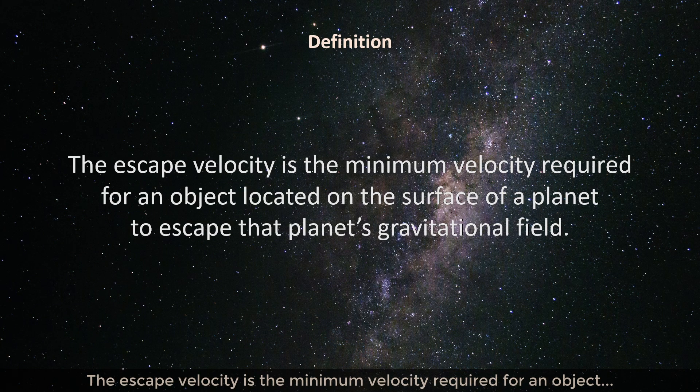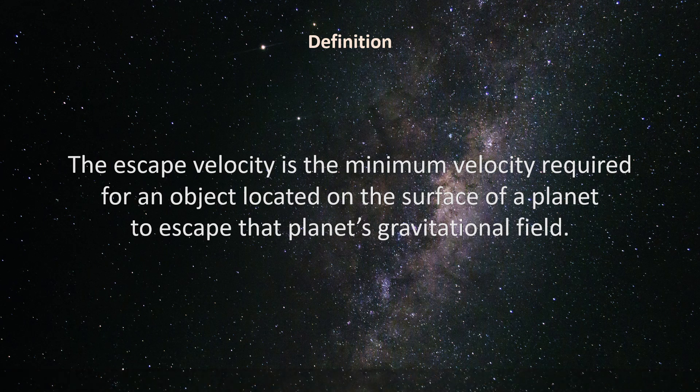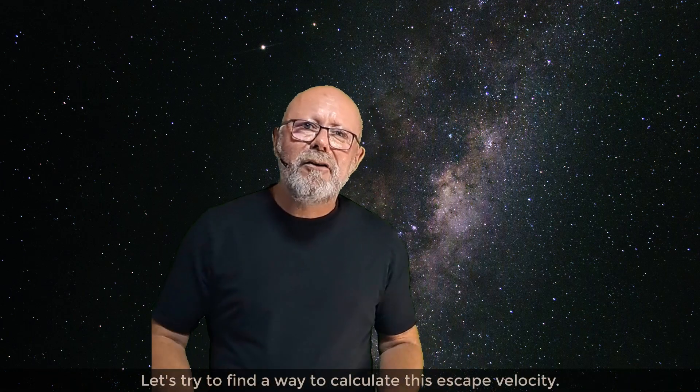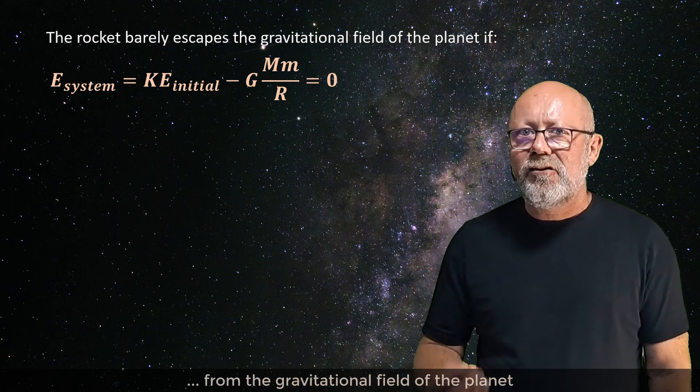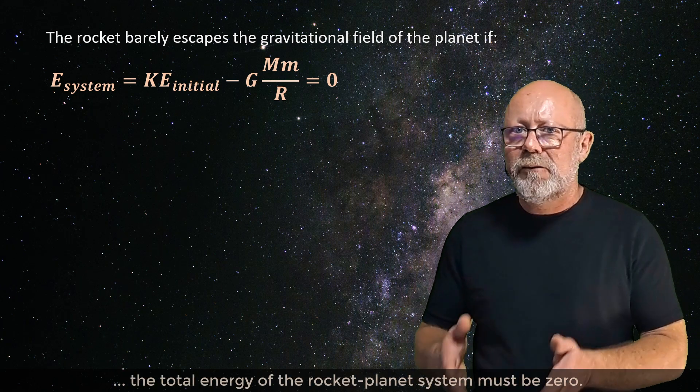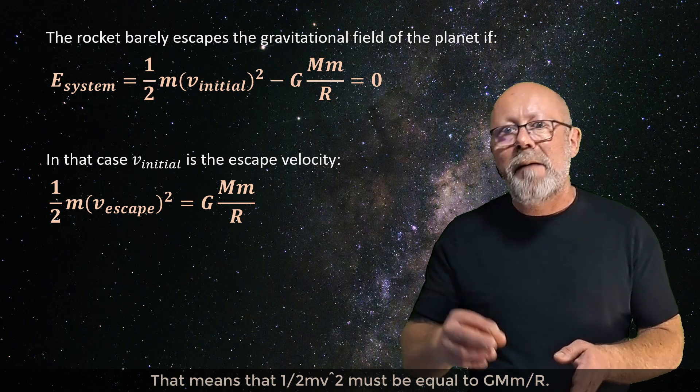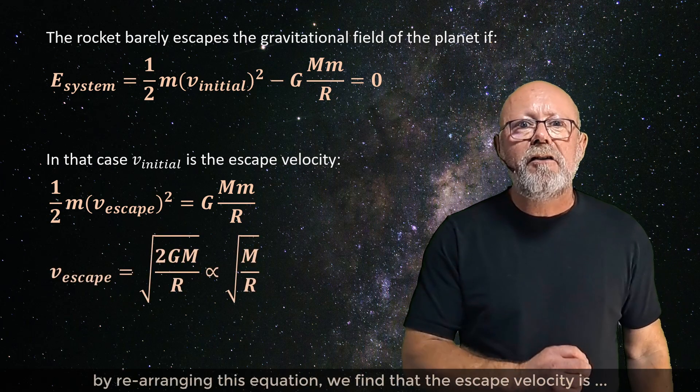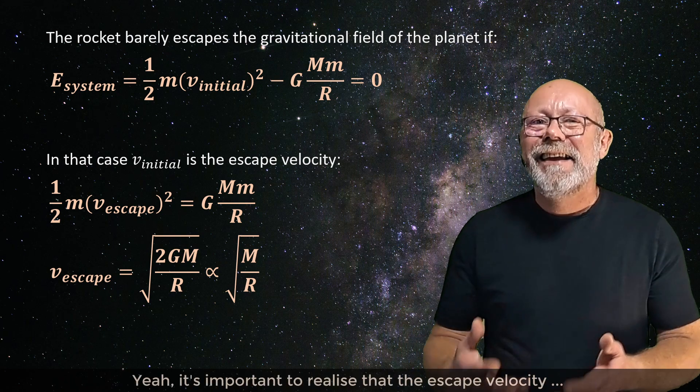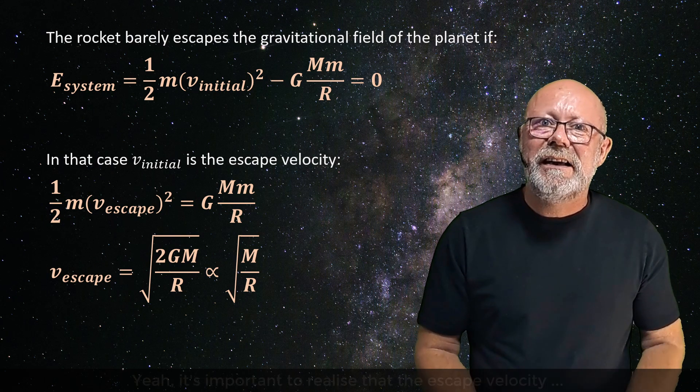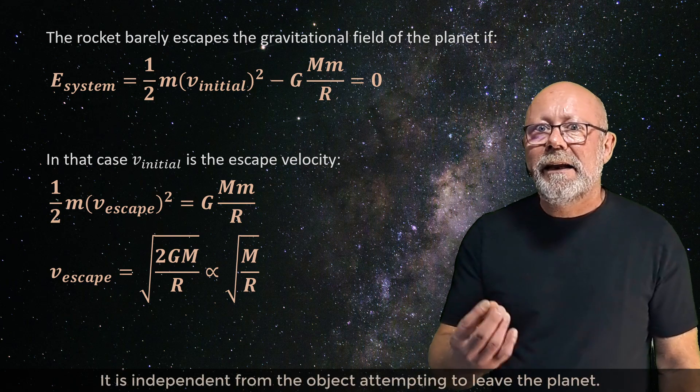The escape velocity is the minimum velocity required for an object located on the surface of a planet to escape that planet's gravitational field. Let's try to find a way to calculate this escape velocity. We have just realized that for the rocket to barely escape the gravitational field of the planet, the total energy of the rocket-planet system must be zero. That means that one-half mv² must be equal to G multiplied by big M multiplied by little m divided by r. By rearranging this equation, we find that the escape velocity is proportional to the square root of the ratio between mass and radius of the planet. Yeah, it's important to realize that the escape velocity only depends on the characteristics of the planet, like its mass and its radius. It is independent from the object attempting to leave the planet.